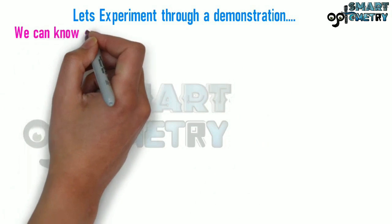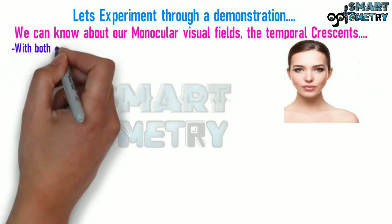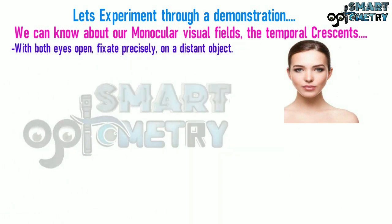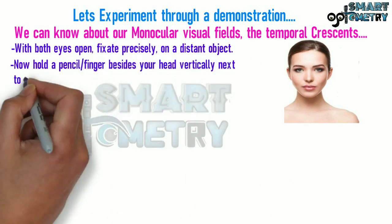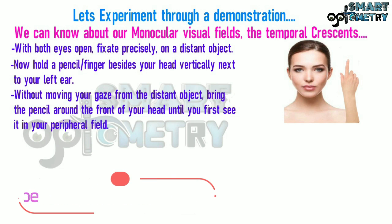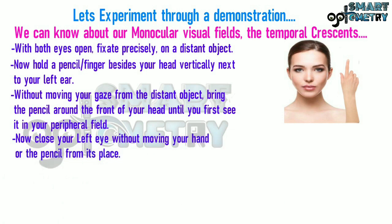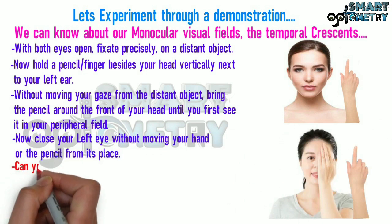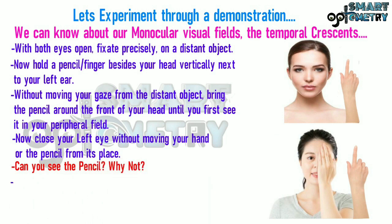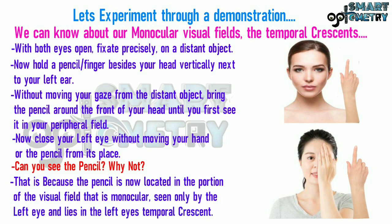Let us experiment through a demonstration to learn about monocular visual fields and temporal crescents. With both eyes open, fix precisely on a distant object. Hold a pencil or finger beside your head vertically next to your left ear. Without moving your gaze, bring the pencil around to the front until you first see it in your peripheral field. Now close your left eye. You cannot see the pencil because it is now located in the portion of the visual field that is monocular, seen only by the left eye, and lies in the left eye's temporal crescent.